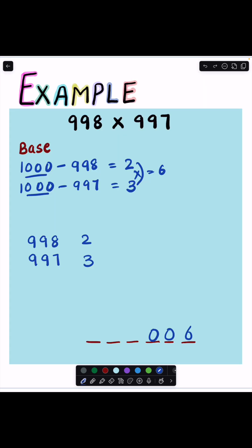If we have subtracted the actual number with the base in step 1, then we will cross-subtract the actual number with the differences in this step. Which means 998 minus 3 and 997 minus 2.